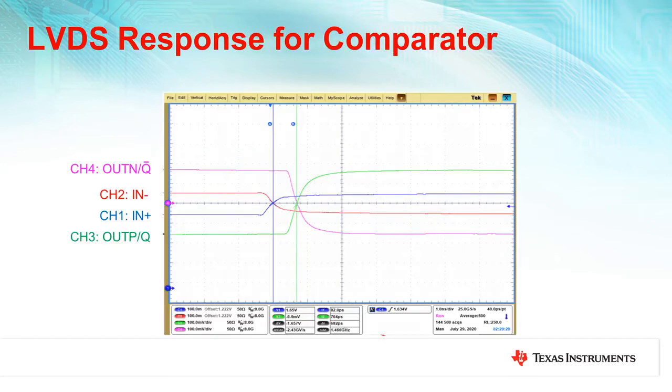An example of a comparator with an LVDS output is shown here. In this scope shot, channel 1 in blue is the signal tied to the non-inverting input pin, and channel 2 in red shows the signal tied to the inverting input pin. Channel 3 in green represents out P, or Q, and channel 4 in pink represents out N, or Q bar. The scope shot shown here has the outputs AC coupled, so the 1.2 volt common mode is centered on the x-axis.